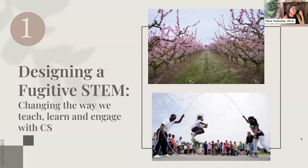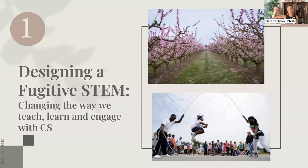Thinking about this hacking — making a system do something it wasn't supposed to do — and about fugitivity, I'm reminded of two things. My grandmother grew up outside Augusta, Georgia, on a sharecropping plantation — the very same plantation where her grandparents were enslaved. The owners' grandchildren owned the plantation my grandmother grew up on. This is very direct history to enslavement.